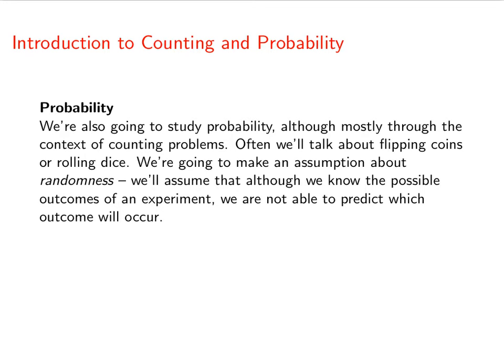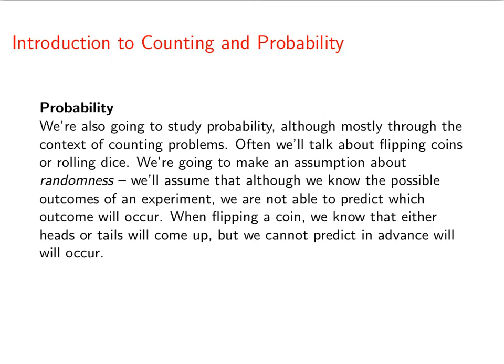We're going to make an assumption about randomness. Now we'll know what the possible outcomes of an experiment are, but we're not going to be able to predict which outcomes will occur. When you flip a coin, you're not going to know whether heads or tails will come up until after it happens.